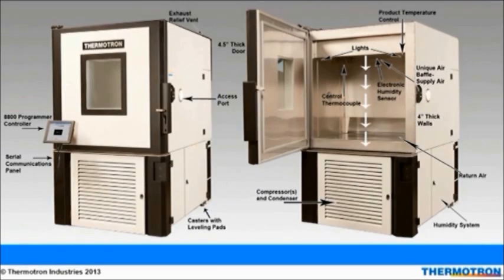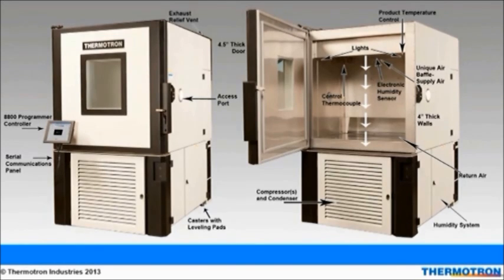Here is an example of how a typical chamber is laid out. First, we will go over the chamber on the left. Starting clockwise with the serial communications panel, you will find the control system right above it. Next, on the top right is where chamber pressures are released through the exhaust relief vent. Next, is an access port that allows wires and thermocouples to be placed on the product under test and hooked up to data acquisition equipment on the outside. Lastly, casters allow for easy chamber maneuvering.